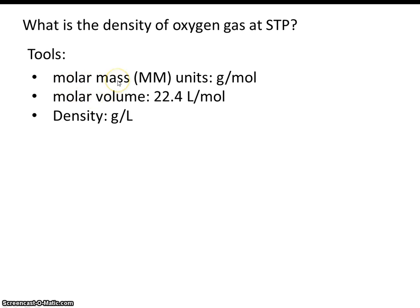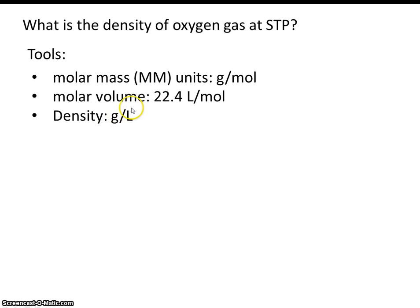Molar mass — we've been dealing with this all year — remember that the units are grams per mole, so grams is in the numerator and moles is in the denominator. Molar volume: one mole of any gas takes up 22.4 liters, so 22.4 liters per mole. And of course density is mass divided by volume, so it's grams per liter — how many grams there are per one liter of gas.